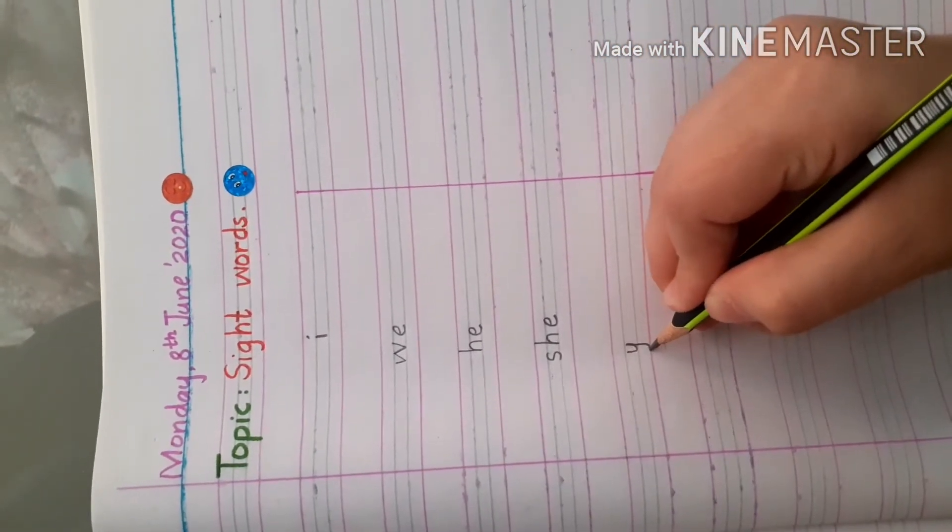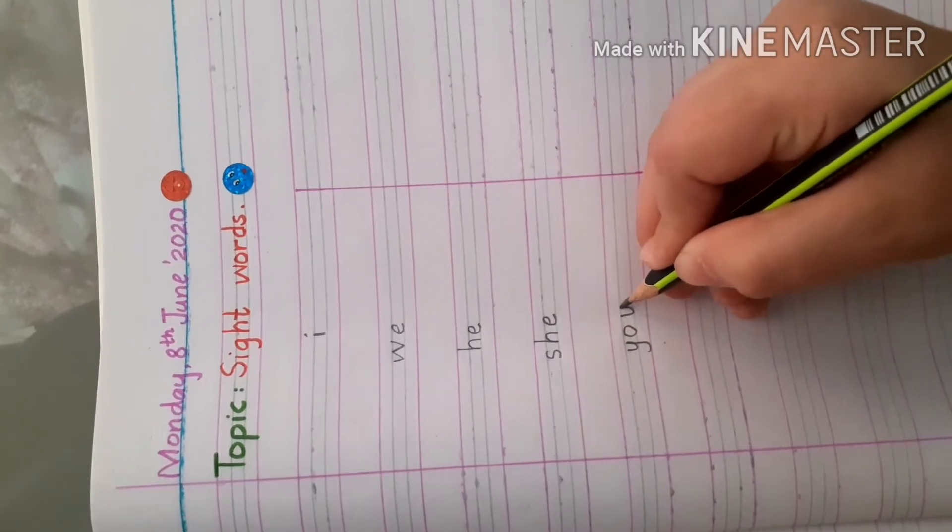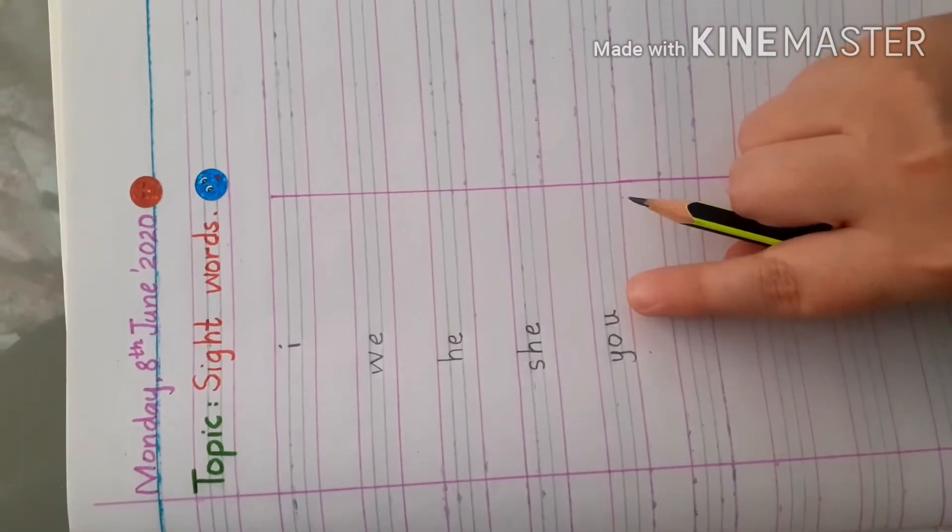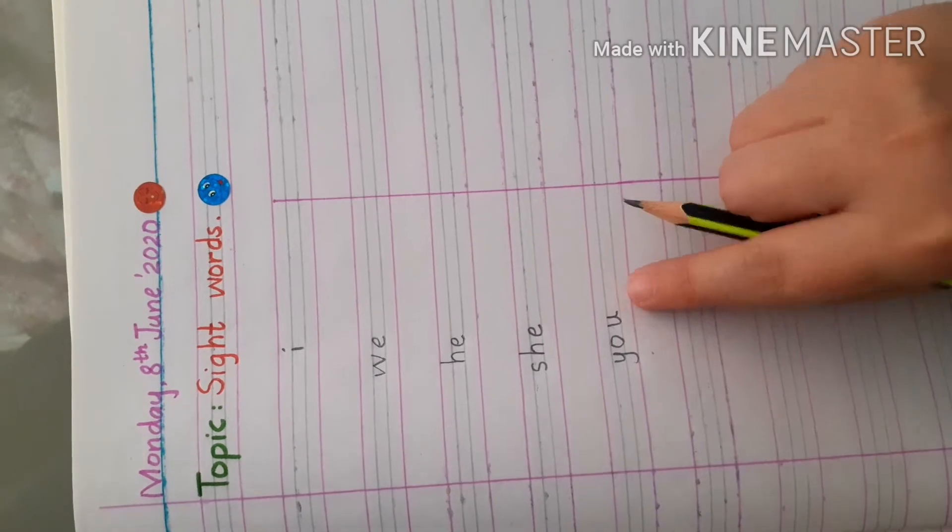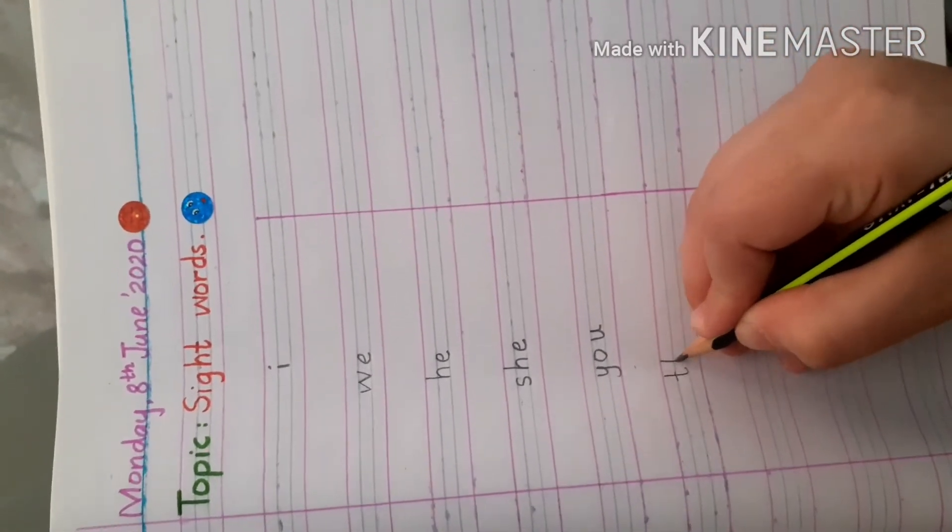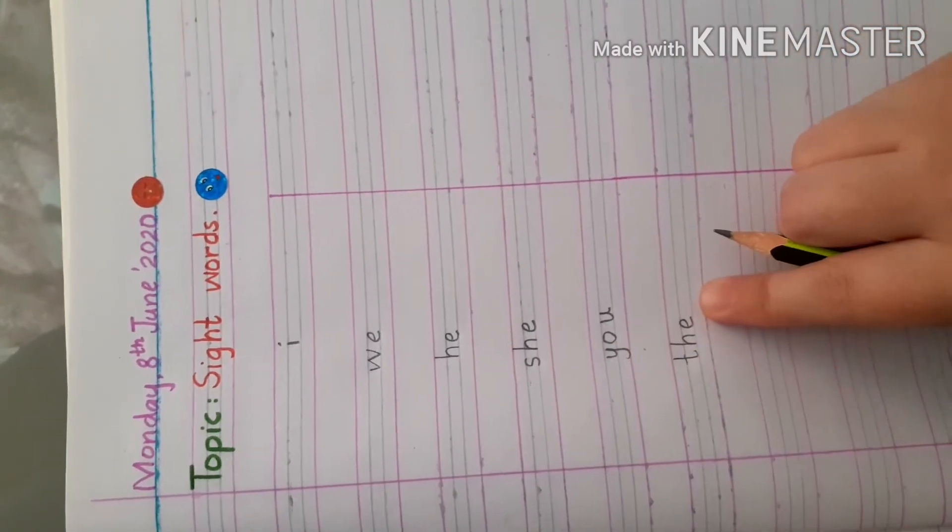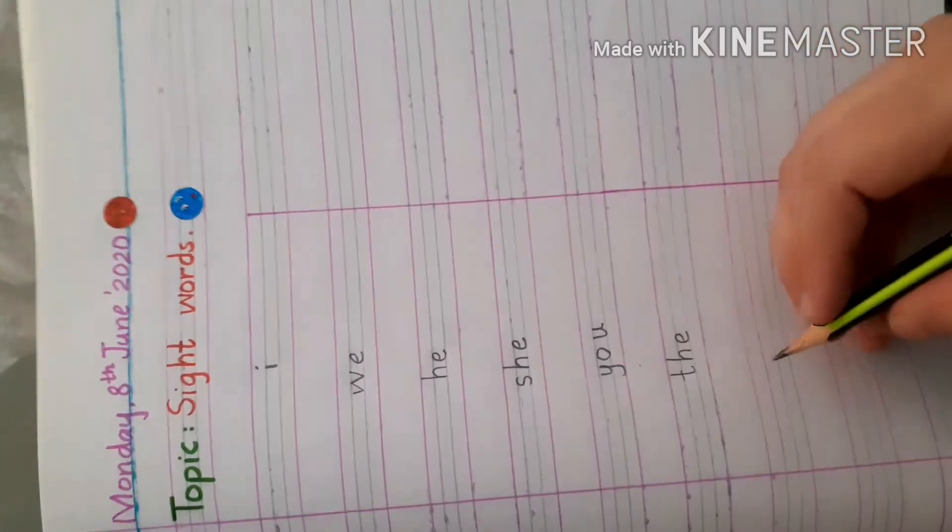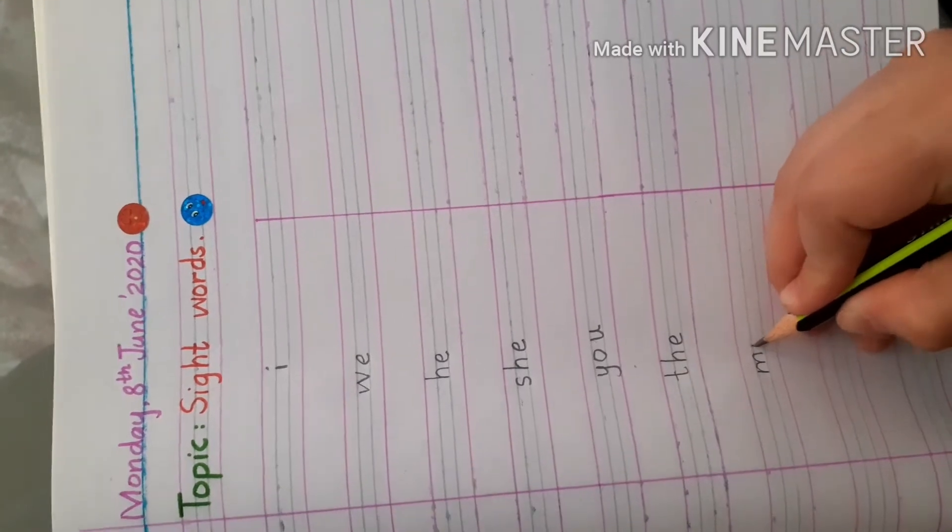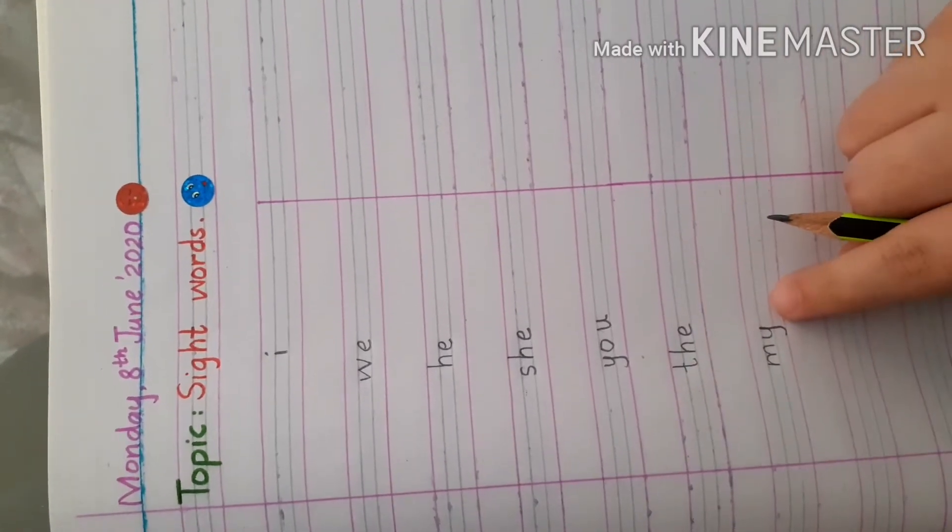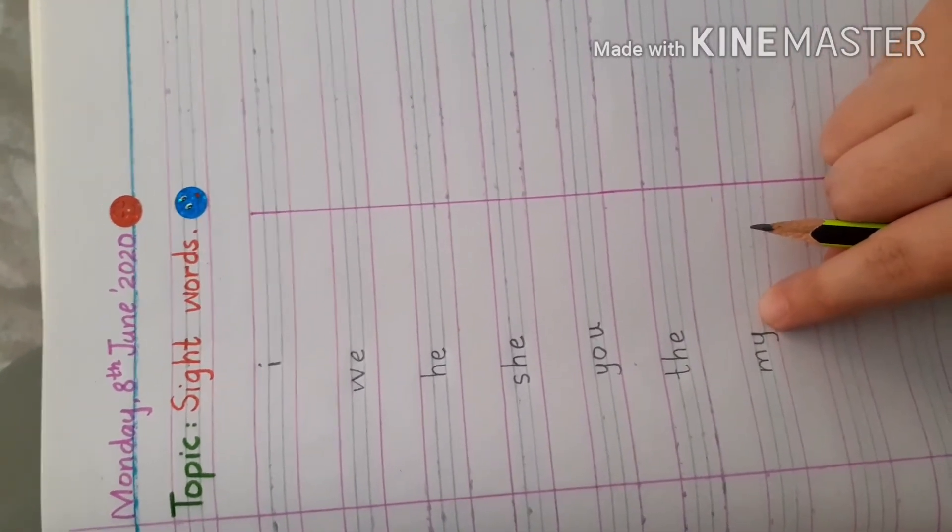Okay, next sight word is Y-O-U, you. T-H-E, the. The.